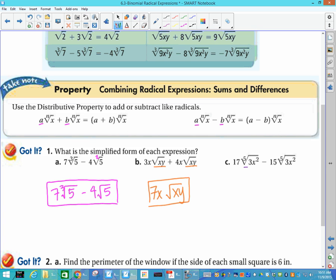Again, look at those blobs and make sure they're the same. So I have the 5th root of 3x squared and the 5th root of 3x squared. So those are my blobs. 17 blob minus 15 blob is going to be 2 blobs, and those blobs are the 5th root of 3x squared. That does not change.